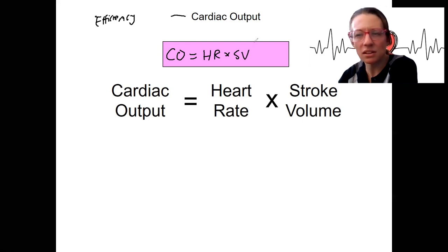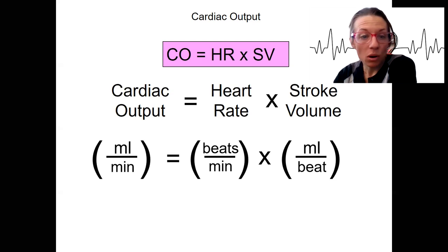Does this make sense that this is the math? Let's look at it. Cardiac output is in milliliters per minute. We take into account heart rate in beats per minute multiplied by stroke volume in milliliters per beat.